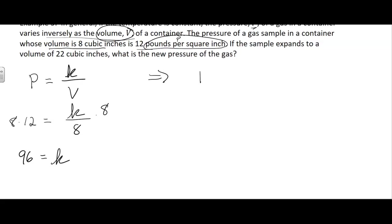All right, then we go up here and now we can make our model into a formula, P equals 96 divided by the volume.